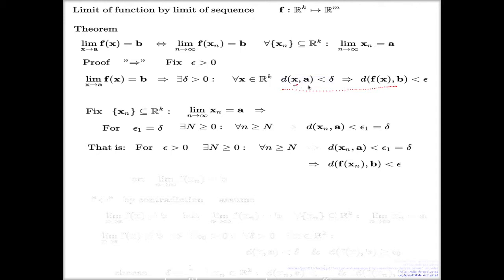If you take xn which is close to a by the distance delta, then f of xn will be close to b by the distance epsilon.